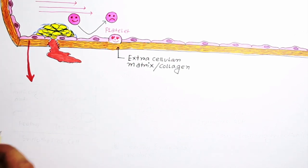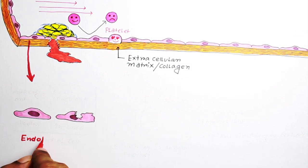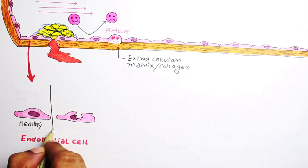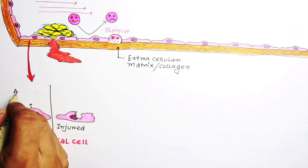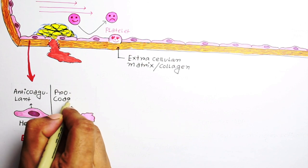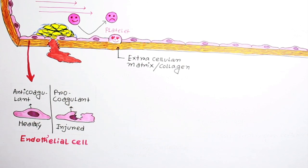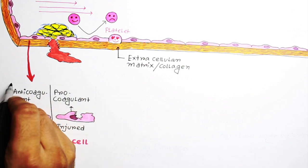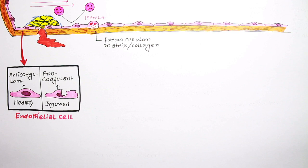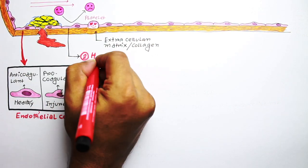Here I would like to mention one important concept regarding endothelial cells. Let's draw two endothelial cells: this one is healthy and this one is injured. You should always remember that healthy endothelial cells have anticoagulant property, but as soon as they get injured they become procoagulant. So healthy endothelial cells are necessary to keep the blood in liquid form.